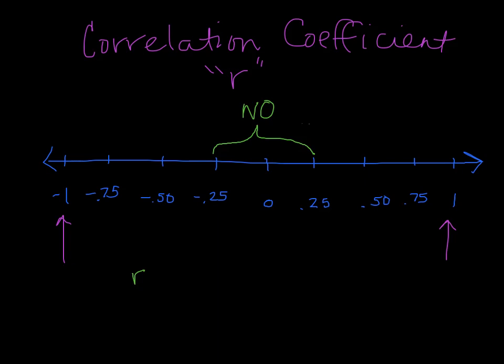Now let's go to the next indicator. If your R value is between 0.25 and 0.50 in the negative or over here in the positive, you would call that a weak correlation. If your R value is negative, like these on the left side of zero, then you would say weak negative correlation. If your R value is positive and it's within that range, you would call that a weak positive correlation.